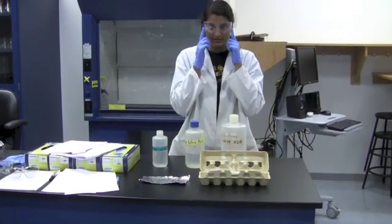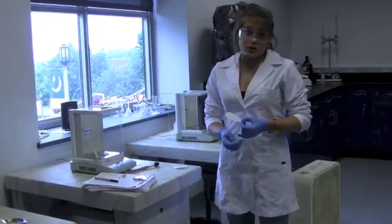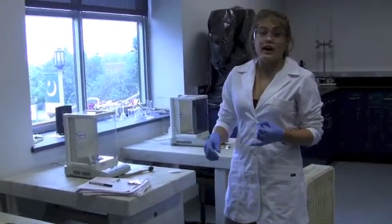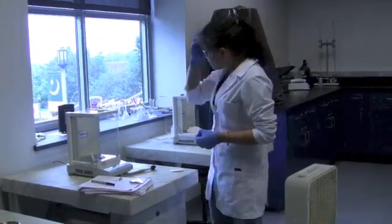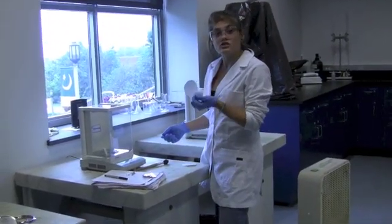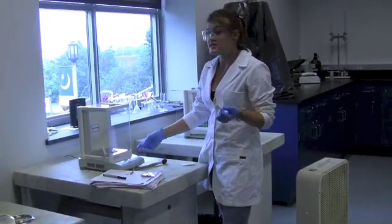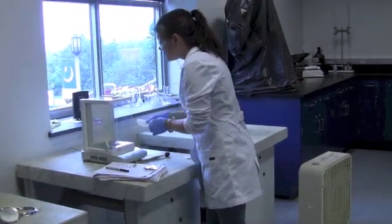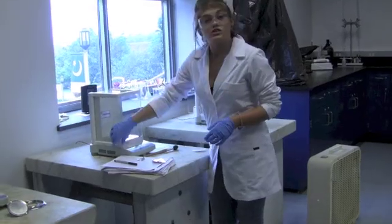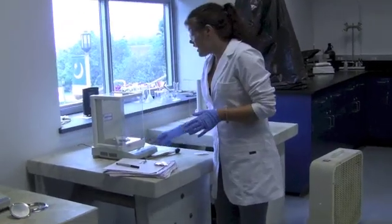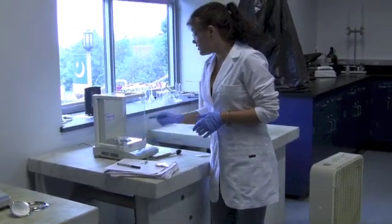The first thing we need to do in this experiment is get approximately 0.5 grams of aluminum foil. When using a scale, always make sure to use a weighing paper so as not to contaminate anything. You place the weighing paper in, close all the doors to make sure that no air disrupts anything, and tare your scale, zero it out.